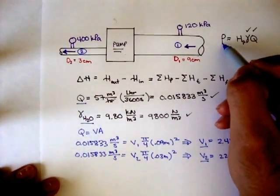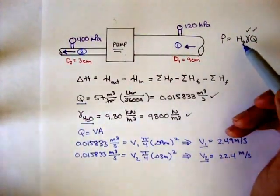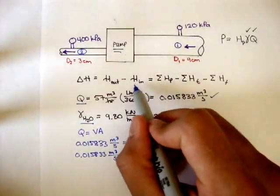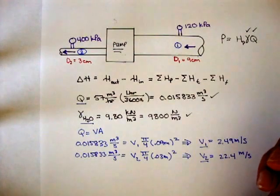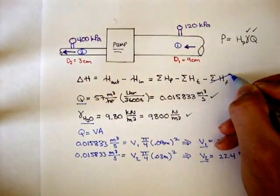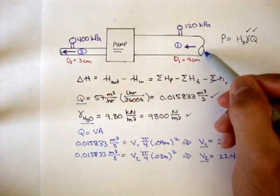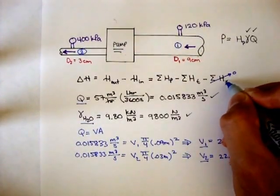So now we have velocity at 1, velocity at 2, we have the specific weight of water, we have the volumetric flow rate, and we need to find power. But in order to find power, we need to find the pump head. Now, in the question, they said, in our analysis, neglect any losses. And what that means is we can neglect any frictional head losses in the pipe, in the pump, in the entrance, and in the exit. So that term is 0 in this equation.